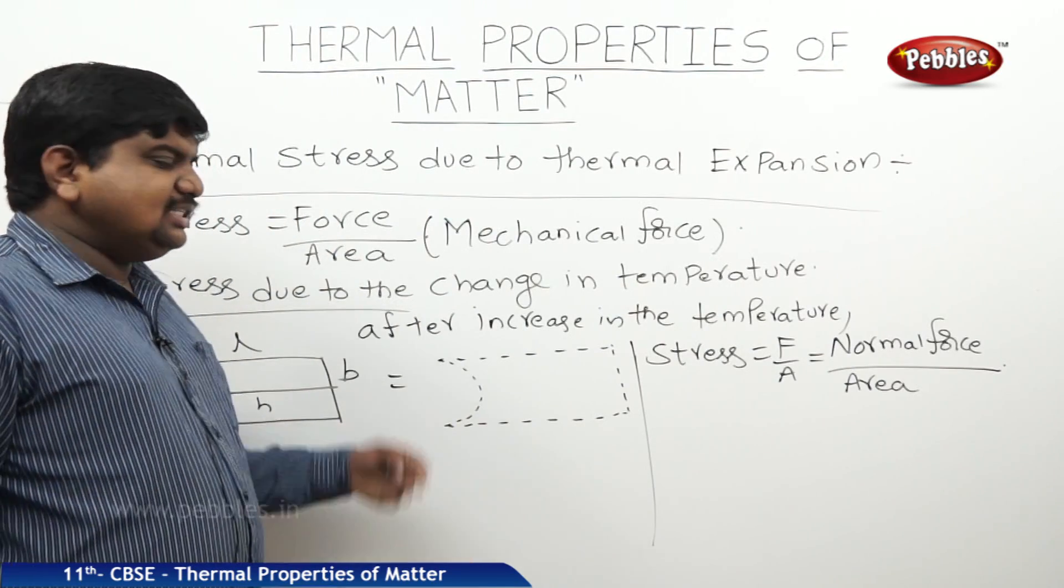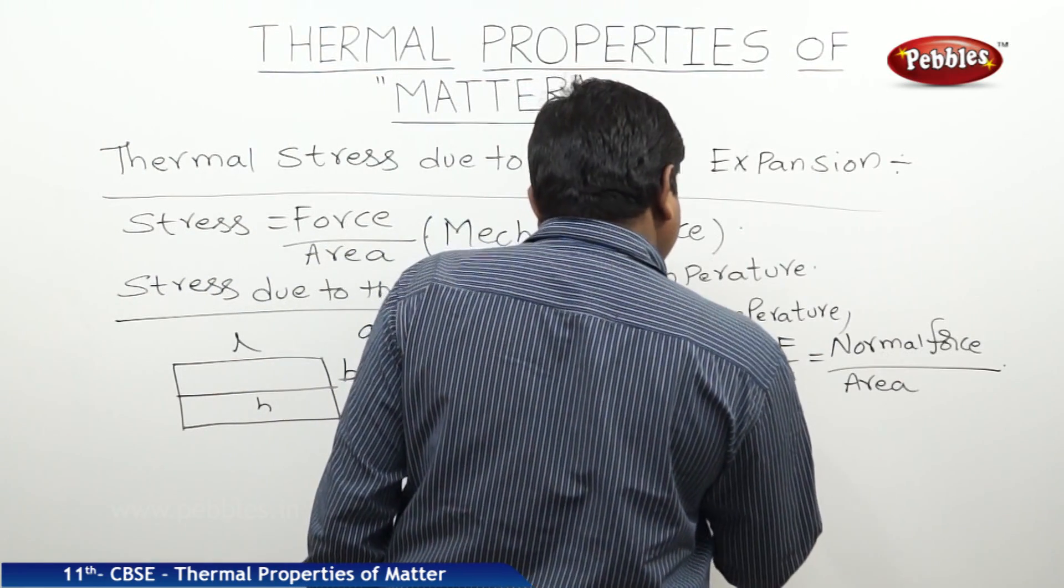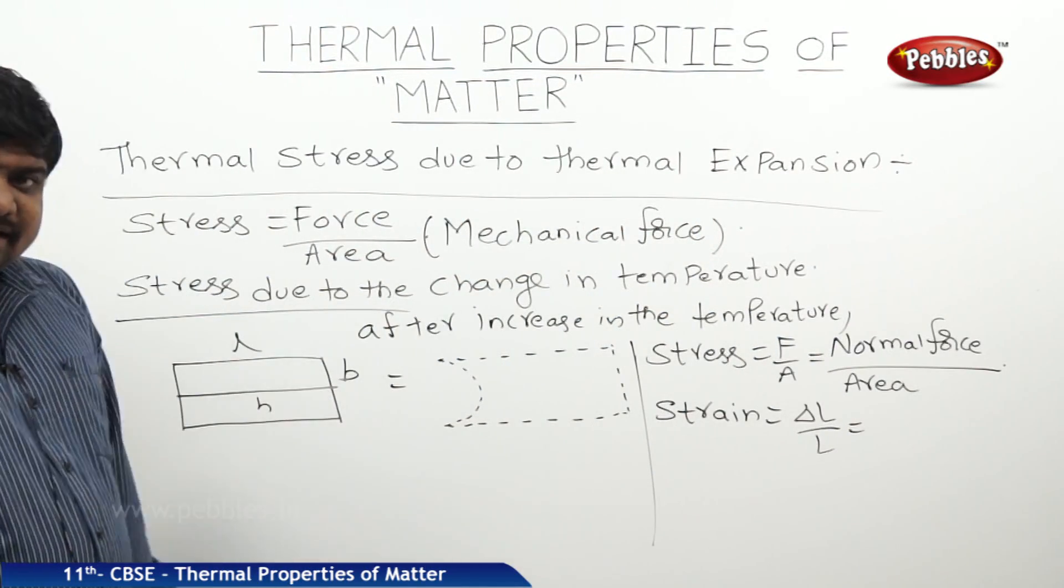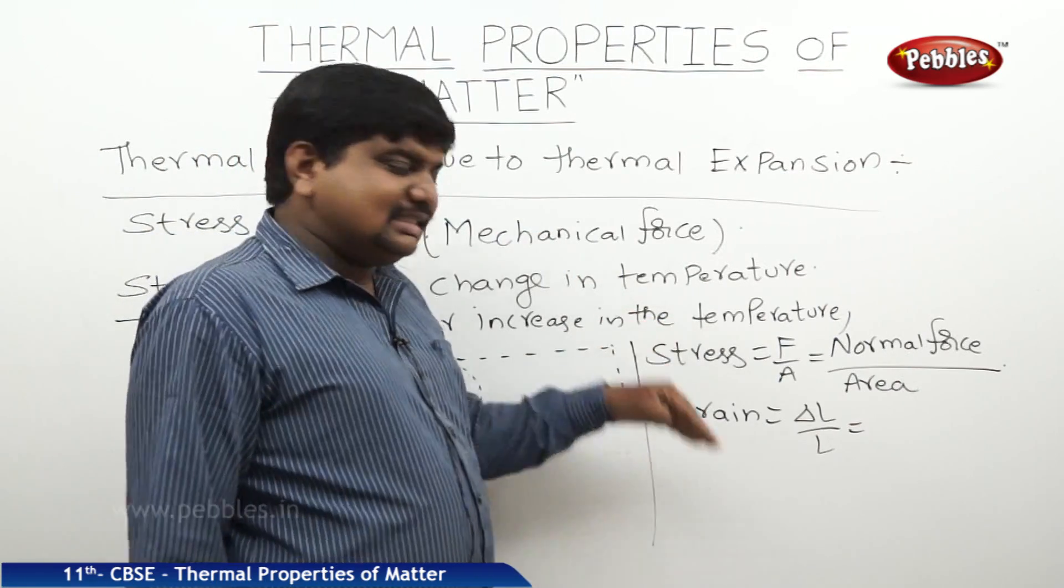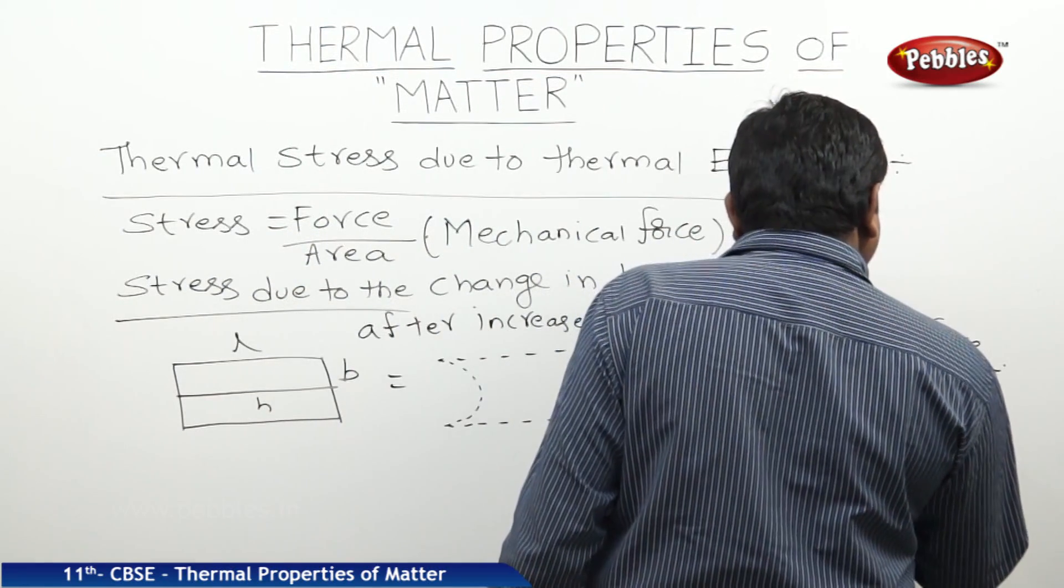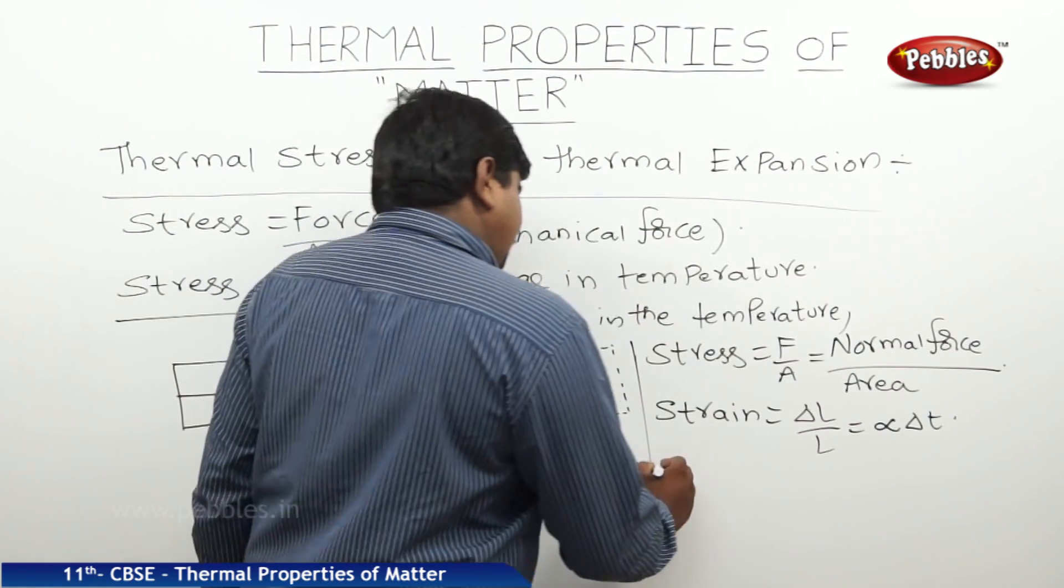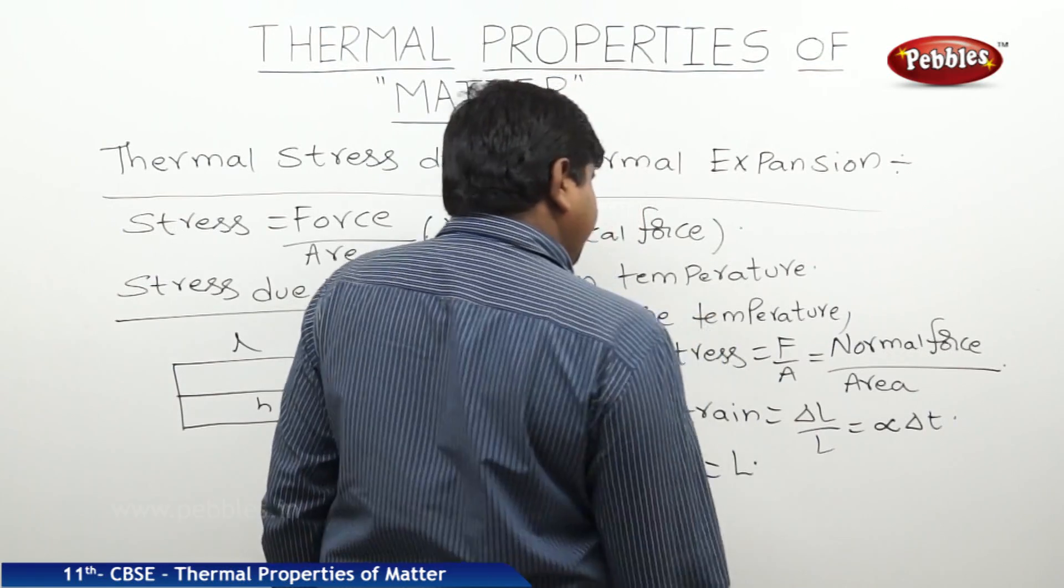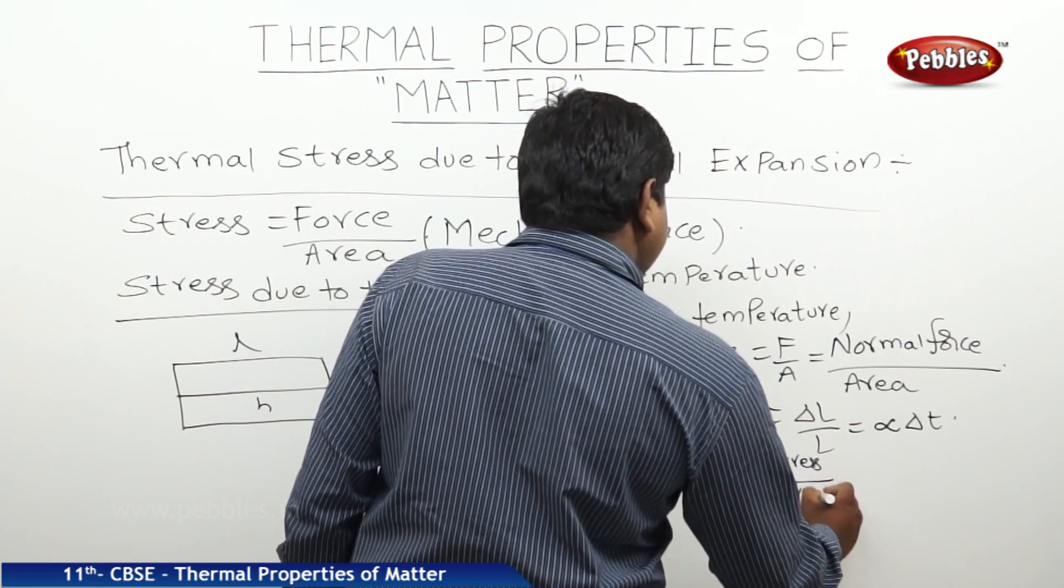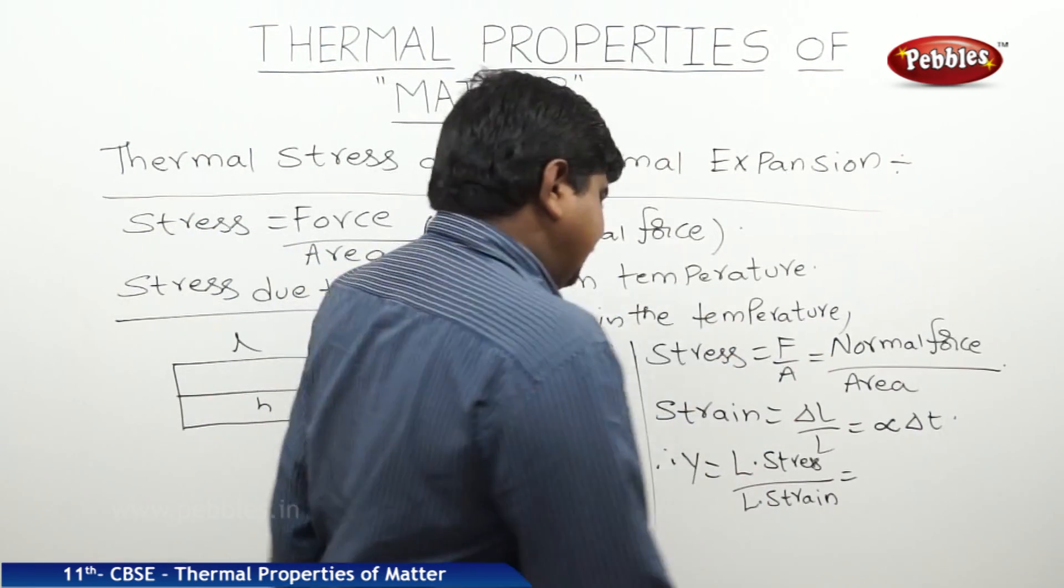We know that the change in the length by original length is nothing but the strain. Strain is equal to delta L by L. But, with the previous examples, what we have discussed about the expansion coefficients, we can write delta L by L is equal to alpha into delta t. Young's modulus is equal to longitudinal stress by longitudinal strain. What is the longitudinal stress? Nothing but the normal force by area, F by A.